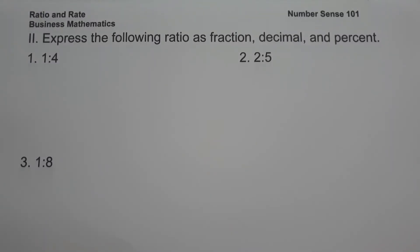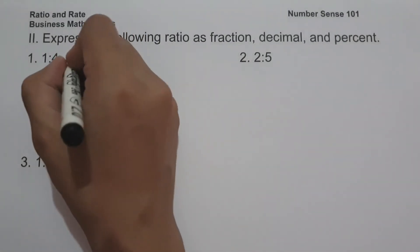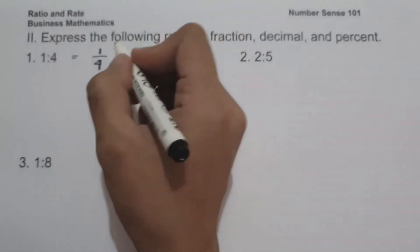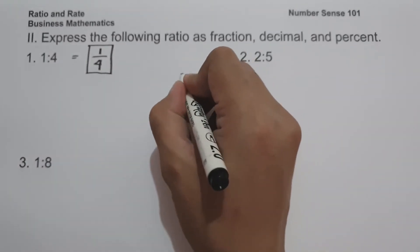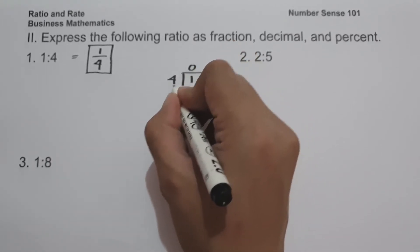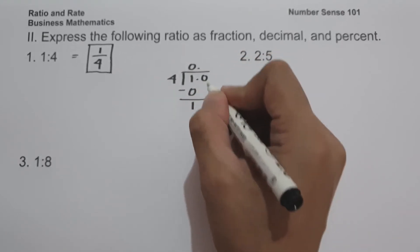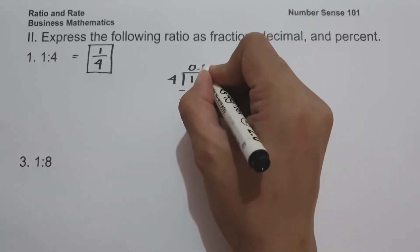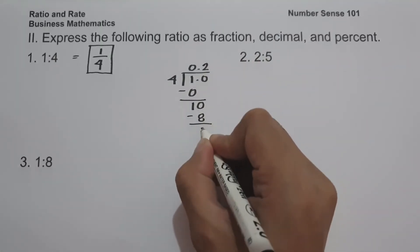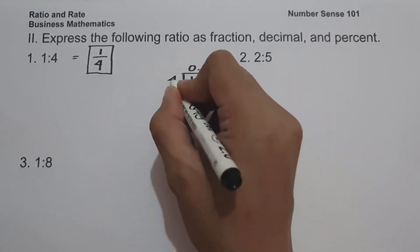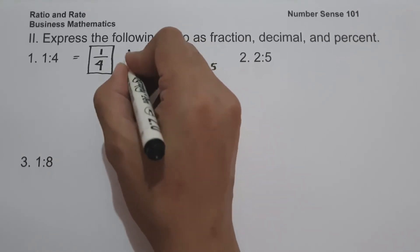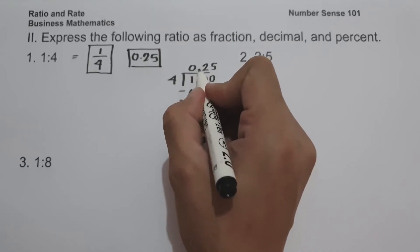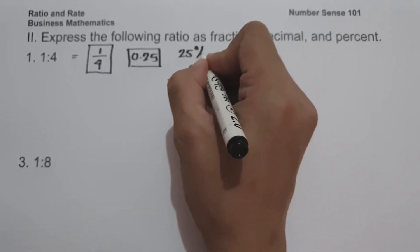On the second set of examples, we are going to express the following ratios as fraction, decimal, and percent. On example number 1, we have 1 is to 4. In fraction form, that is 1 over 4. To write it as a decimal, we divide 1 by 4, which gives 0.25. To write this as a percent, we move two decimal places to the right, giving us 25 percent.